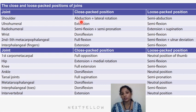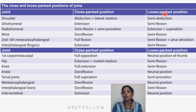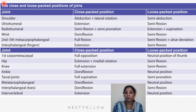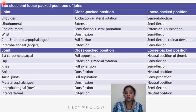In the loose packed position, the articulating surfaces are minimally in contact with each other. In the closed pack position, the articulating surfaces are fully congruent — fully utilized — with full stability. The position of maximum congruency of articulating surfaces and joint stability derived from bone alignment is the closed pack position, which is opposite to the maximum loose packed position.